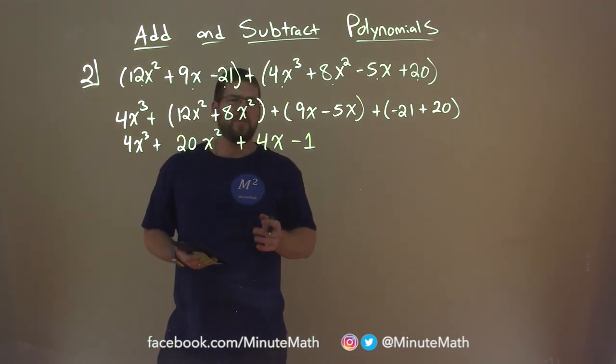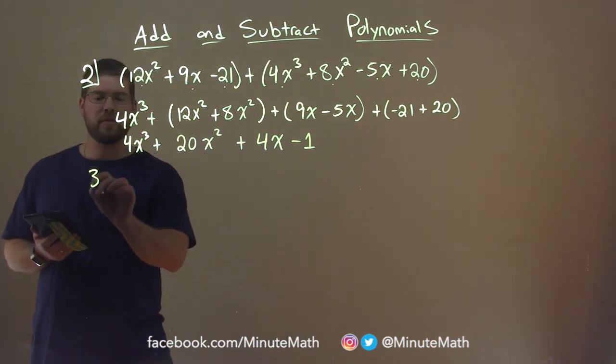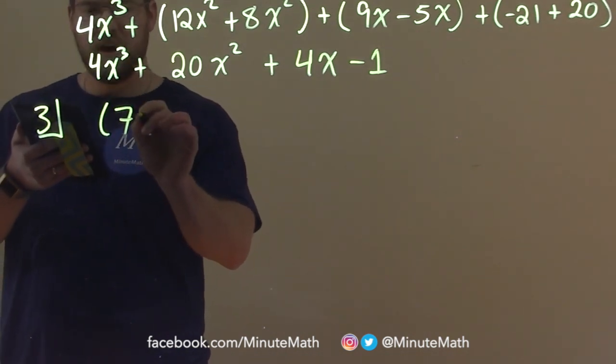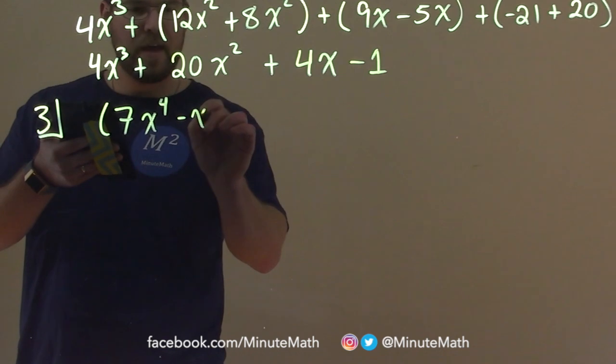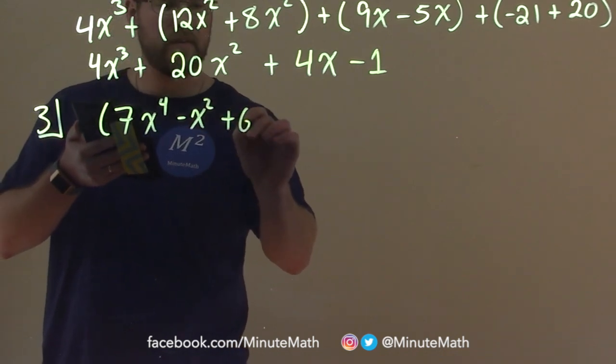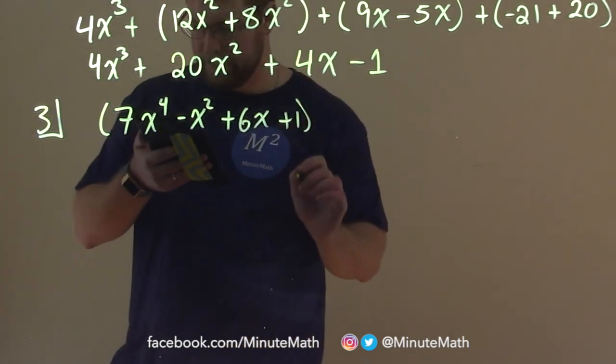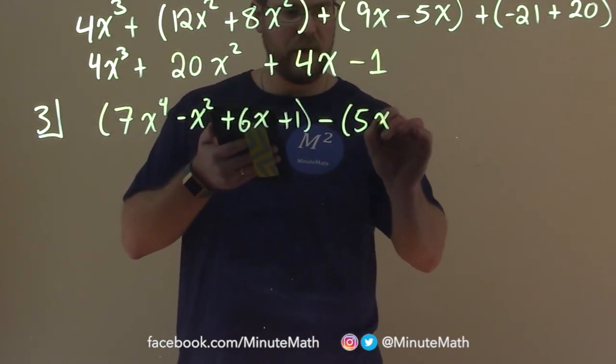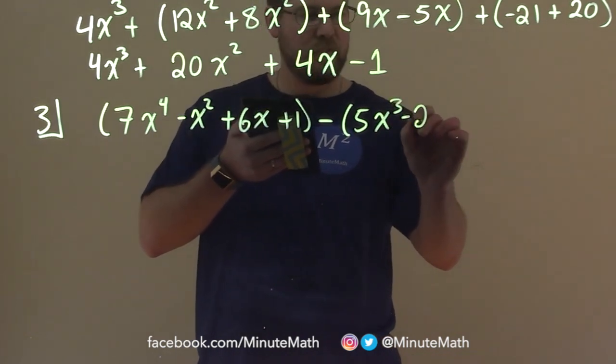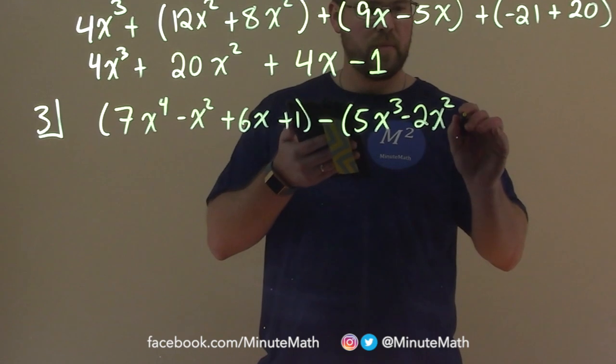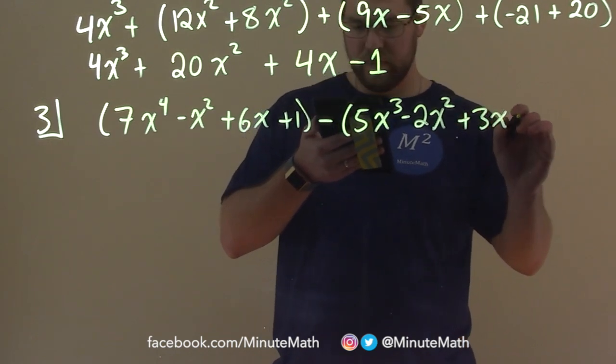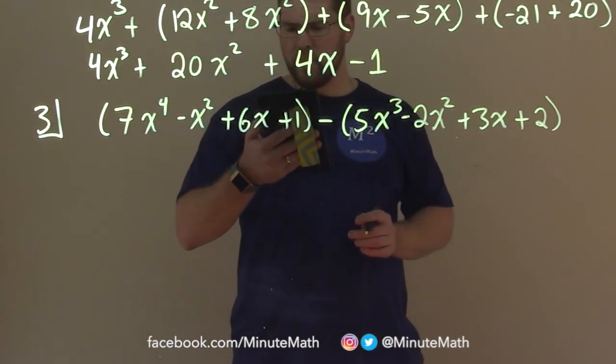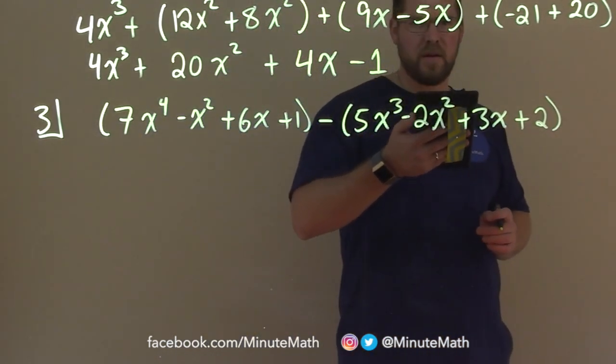Let's go with another example here, but for subtraction. We're going to subtract polynomials here. We have another problem here. We have 7x to the fourth minus x squared plus 6x plus 1 minus 5x to the third power minus 2x squared plus 3x plus 2. Let me make sure I have the whole problem right.